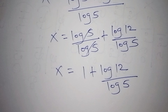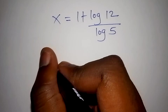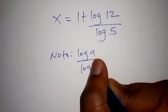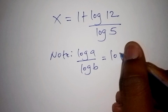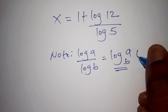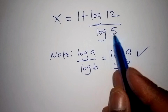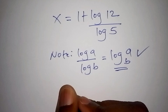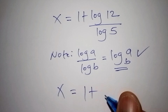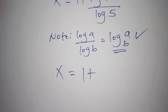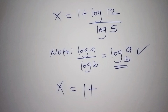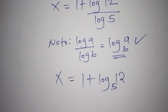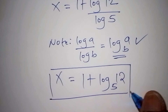Before finalizing, let us note that log A over log B can also be written as log of A to the base of B. We want to express log 12 over log 5 in this form. So finally, x equals 1 plus log of 12 to the base of 5. This is our value for x.